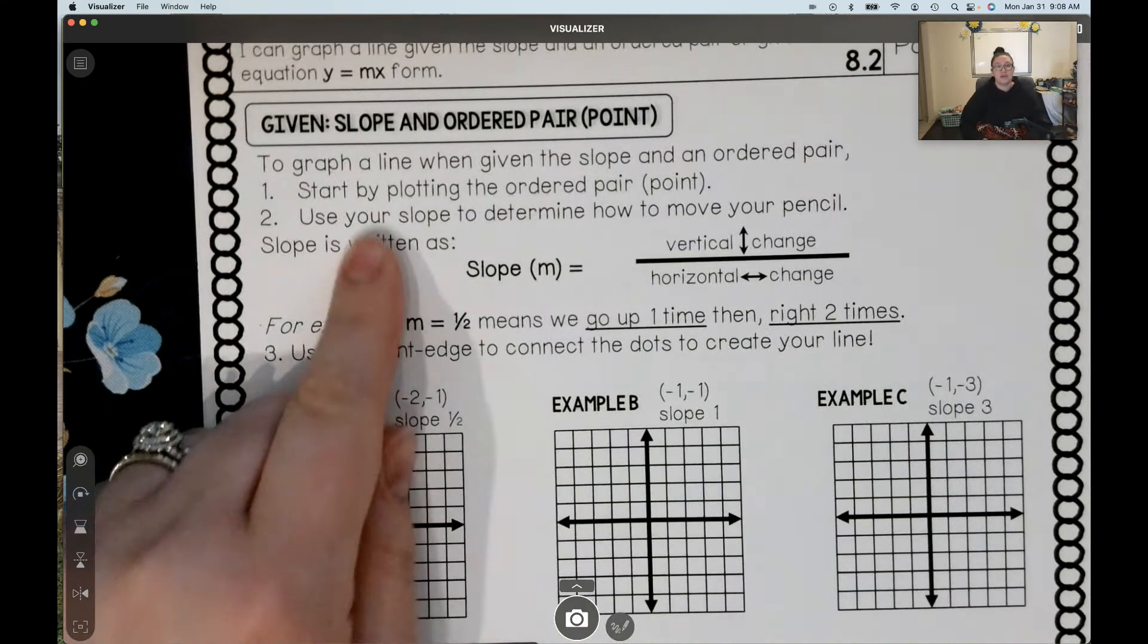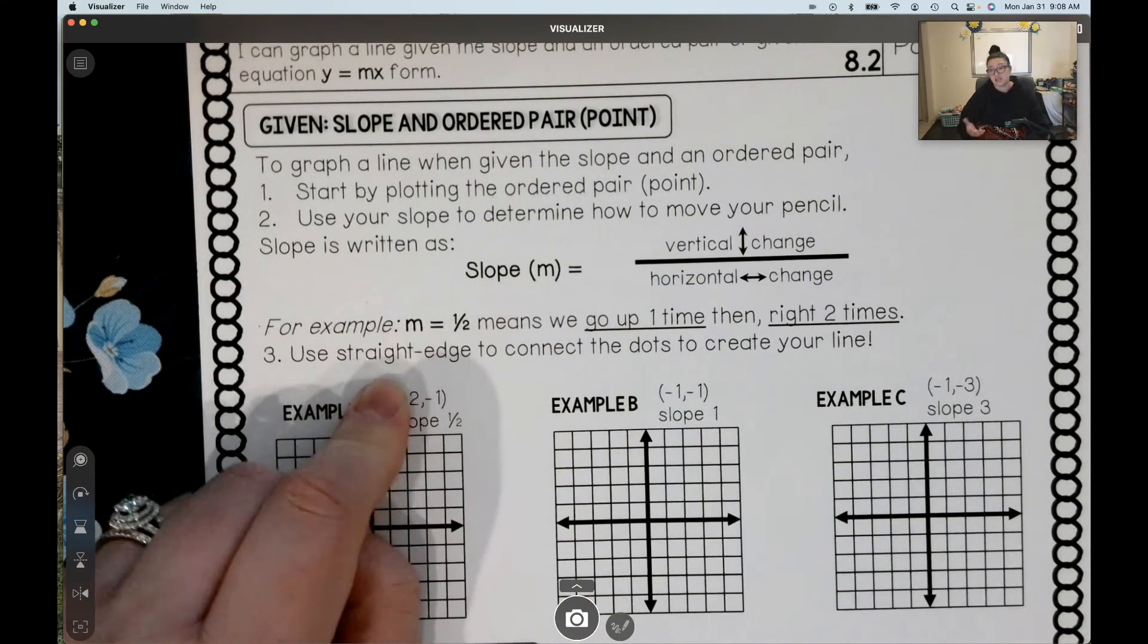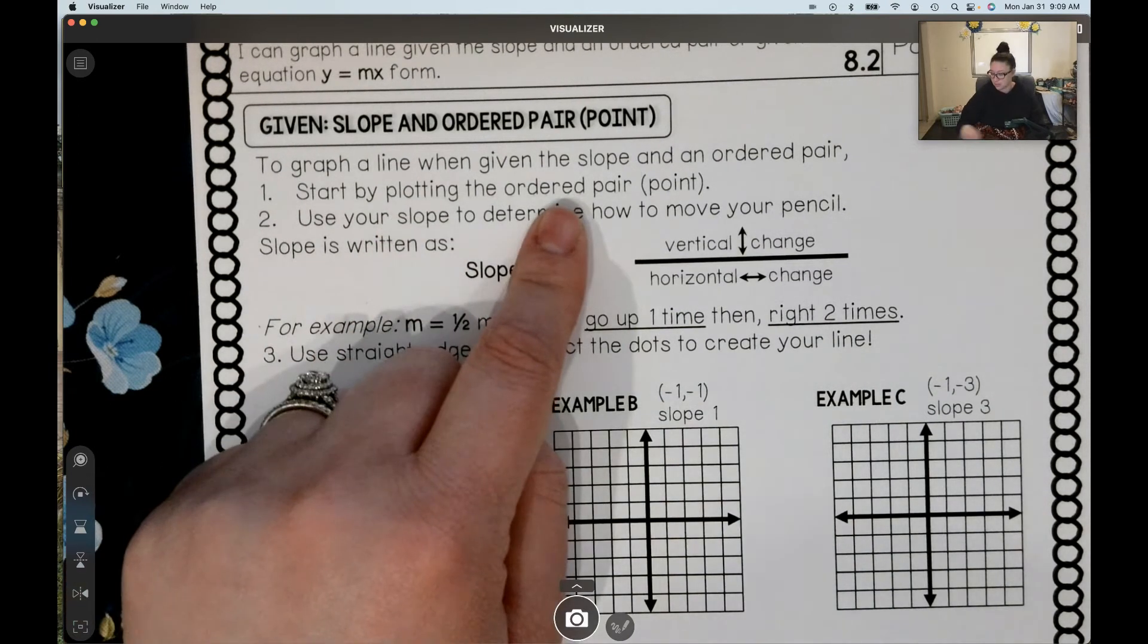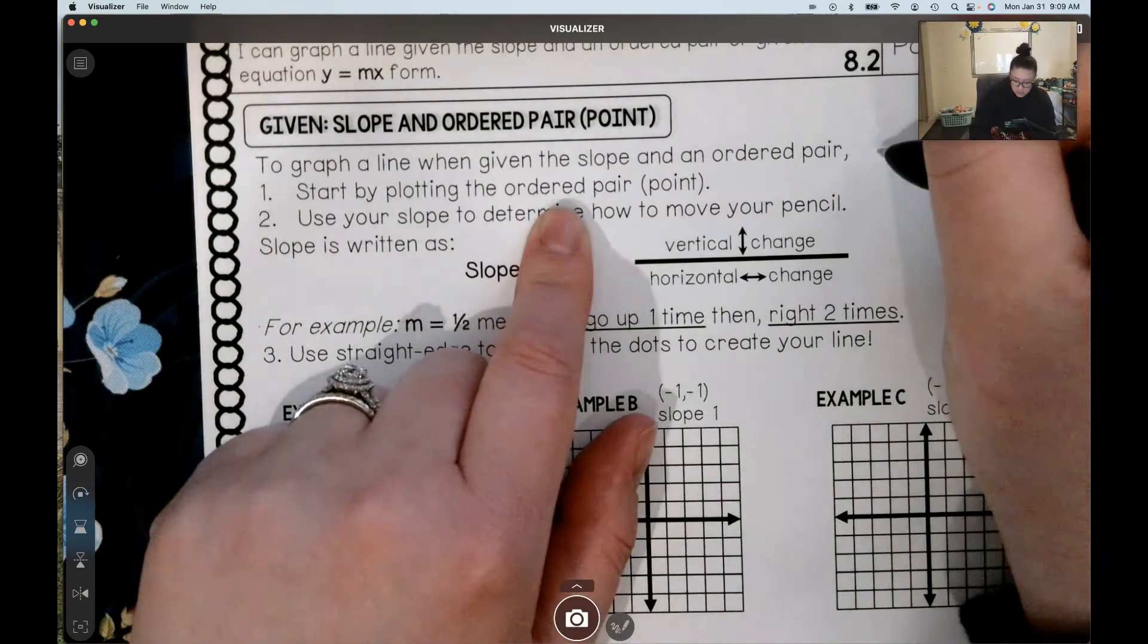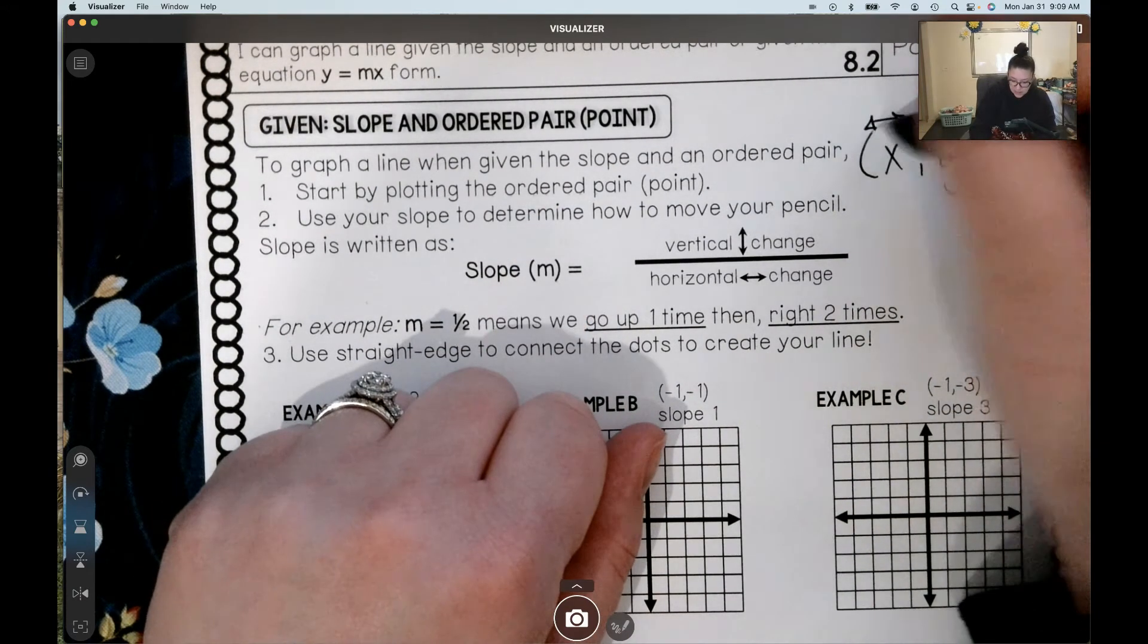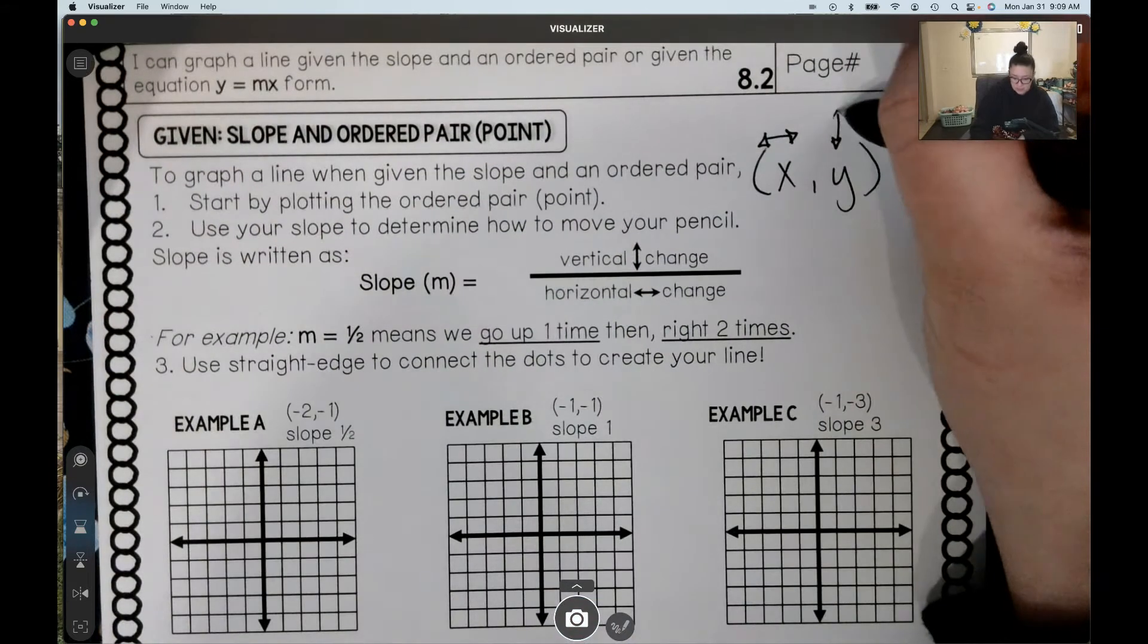So to graph a line when we have our slope and our ordered pair, we've got two steps. Oh, I guess three because we've got to connect the dots. First, we want to plot the ordered pair, the point. Again, your ordered pair is in the form x comma y, where x is left to right how we move, y is up and down how we move.